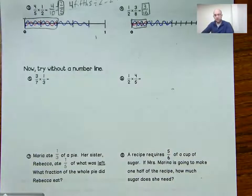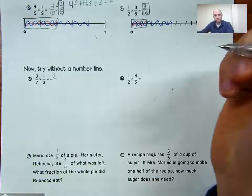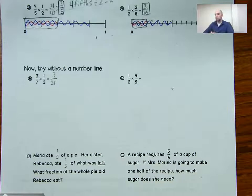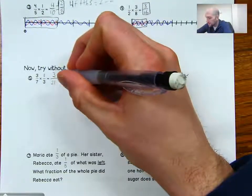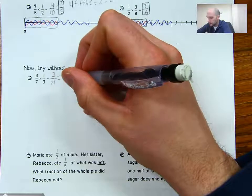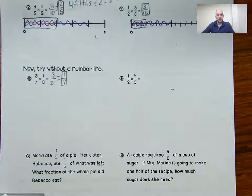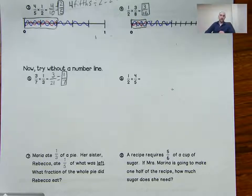So for three-sevenths times one-third without a number line: three times one is three, and seven times three is twenty-one, giving three twenty-firsts. Twenty-one is a multiple of three, and three is a multiple of three, so I can simplify by dividing both by three — three divided by three is one, and twenty-one divided by three is seven. I end up with a product of one-seventh. So three-sevenths times one-third is one-seventh. One-third of three-sevenths: one-third of three is one, and if our unit is sevenths, a third of three-sevenths should be one-seventh.